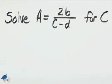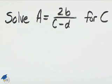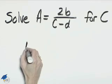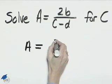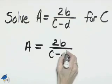Solve the equation A equals 2B over C minus D for C. In order to solve this for C, we need to get that out of the denominator. So we can multiply both sides of this equation by the denominator C minus D.